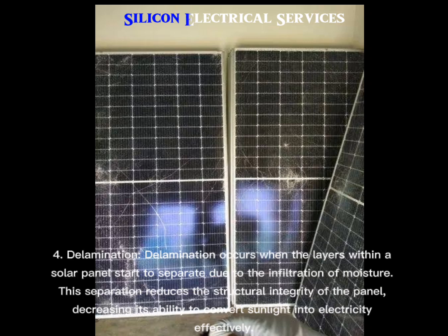Delamination occurs when the layers within a solar panel start to separate due to the infiltration of moisture. This separation reduces the structural integrity of the panel, decreasing its ability to convert sunlight into electricity effectively.